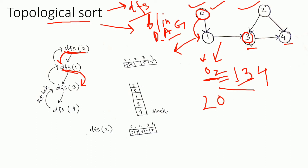From vertex 3, the adjacent vertex available is vertex 4. So from vertex 3 we go to vertex 4. From vertex 4, there are no adjacent vertices available, so we push vertex 4 inside the stack and return back to the caller. The caller of DFS 4 is DFS 3.